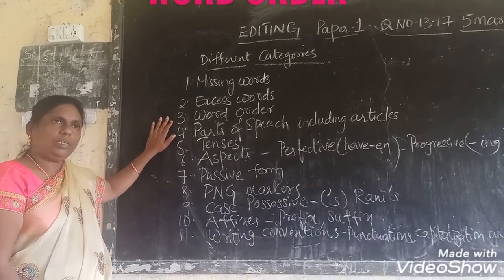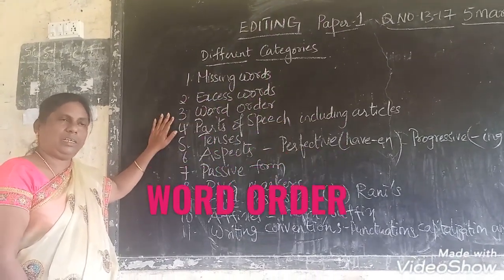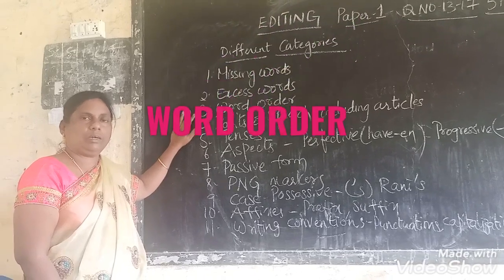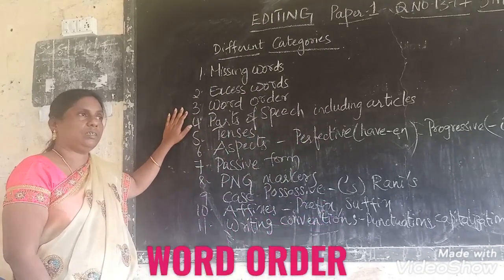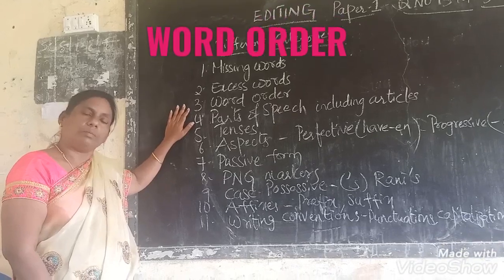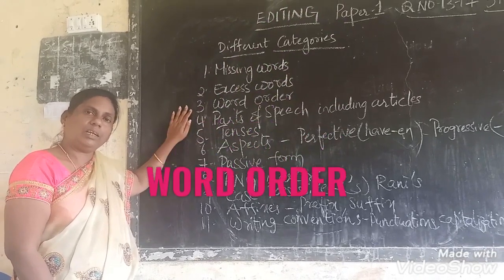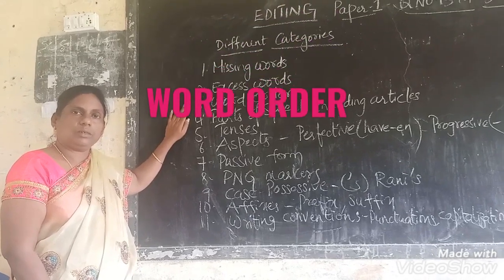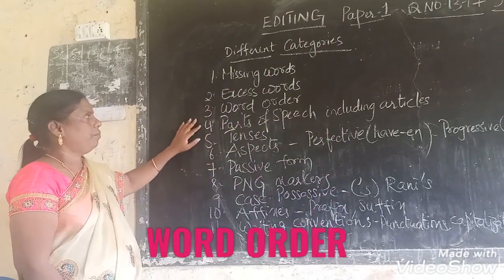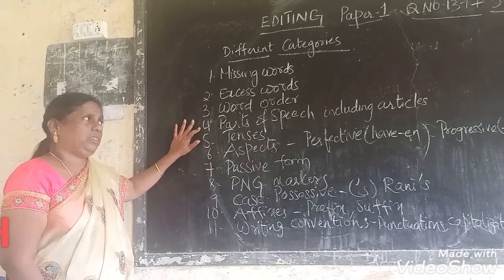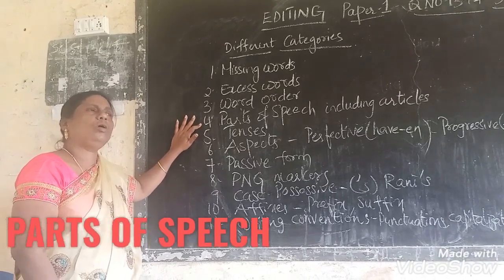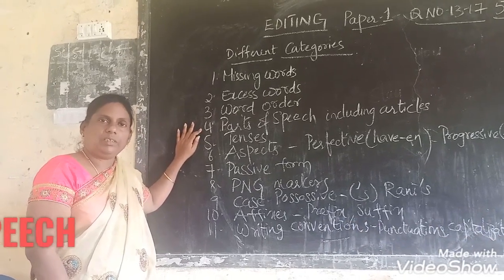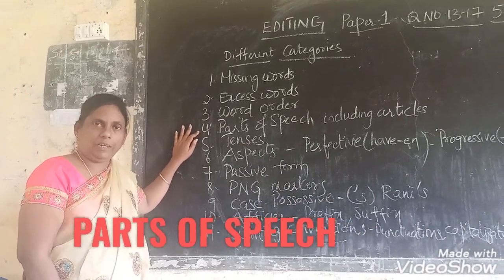Word order: we have to form a word order for constructing a sentence. While constructing a sentence in Kannada, we use Katha, Karma, Kriya — that is subject, object and verb. But while constructing an English sentence, we have to follow the order: subject, verb and object. Then, parts of speech — you all know the eight parts of speech involved in English. See whether they are placed or used correctly.